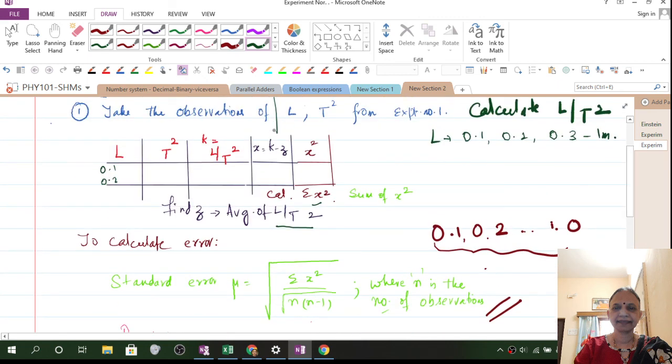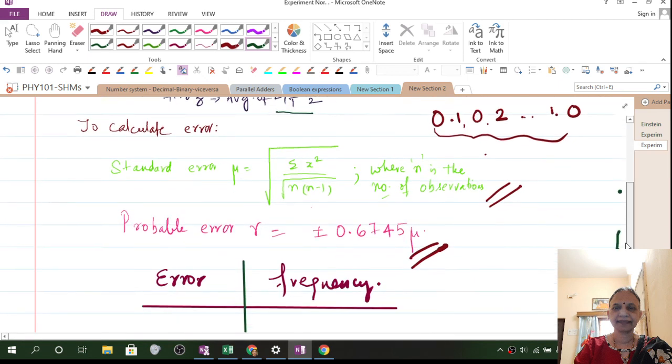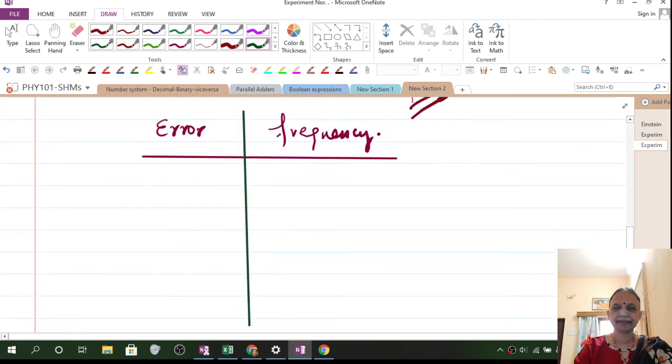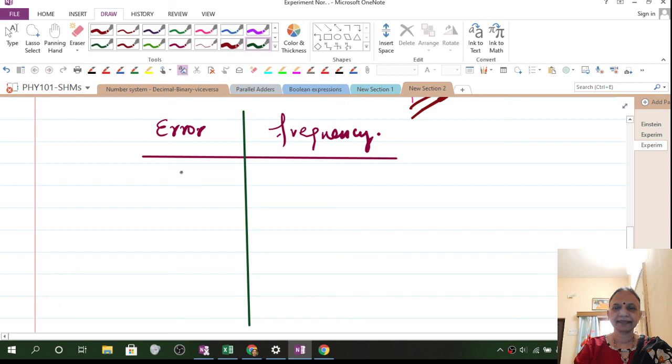x is equal to k minus z. k is what? L by T squared. What is z? The average. Sometimes k can be greater than z or k can be less than z. So that means you will get x to be positive or negative. Or sometimes there won't be any value, any difference. Then you will get it as 0.